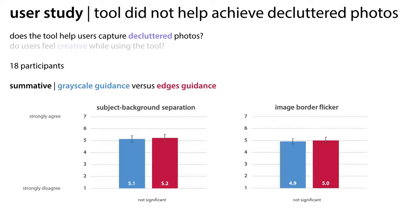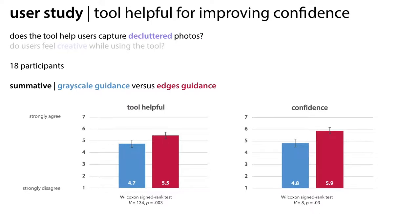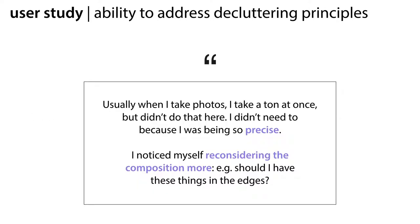We did not see a significant improvement in overall quality in terms of these principles. However, participants did believe that the tool was helpful for capturing clear and decluttered images. It also made them more confident in their ability to address the decluttering principles of subject-background separation and image border flicker. Participants described feeling like they could take fewer photos because they could be more confident in each photo they took.